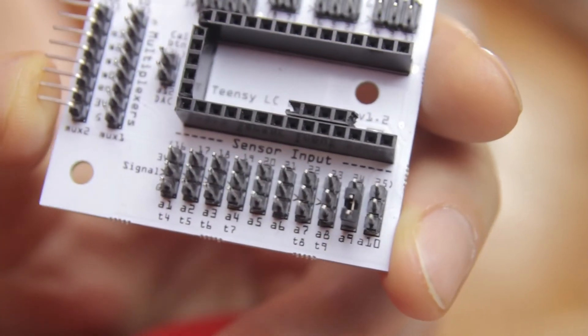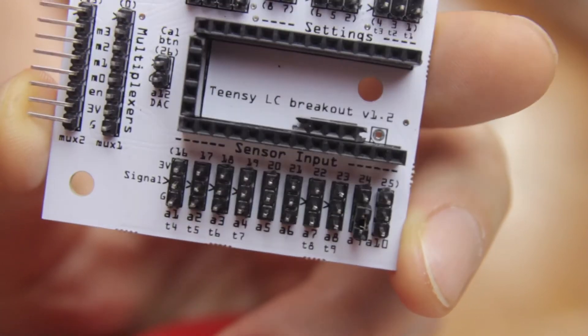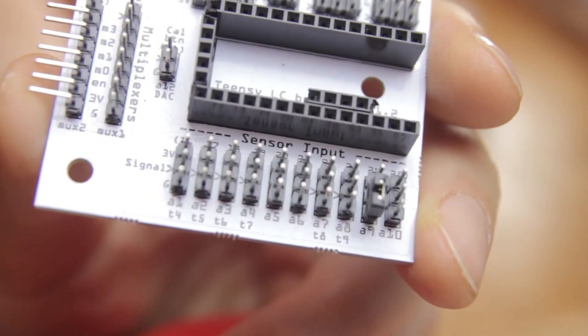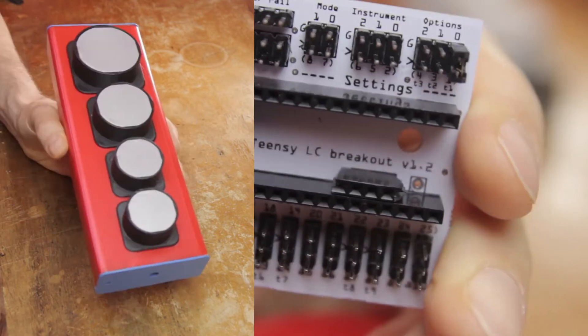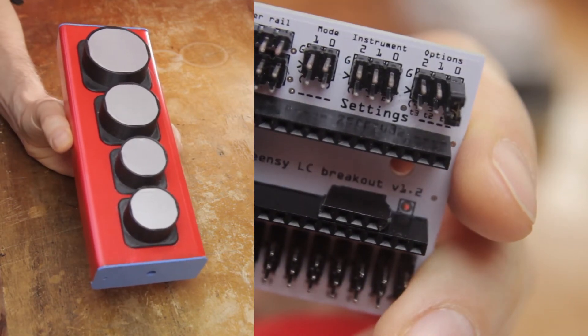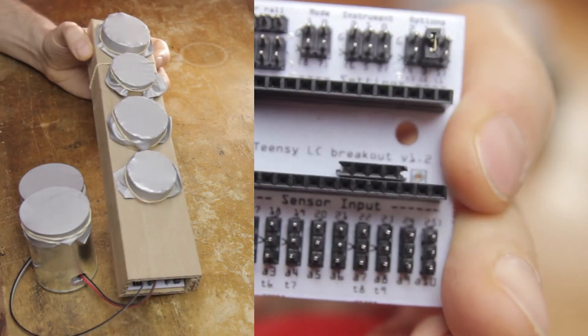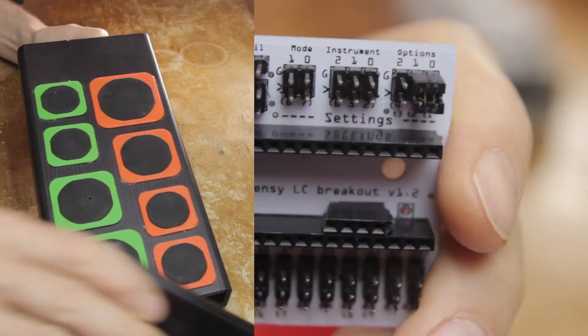Then of course you can also select how many drums you want to make, which is done with option pin zero and one. You can choose between one, four, six, or eight sensors.